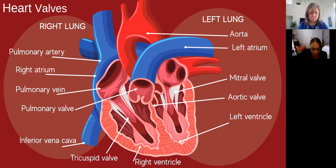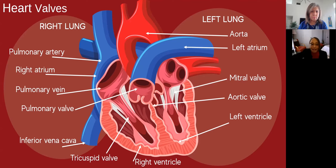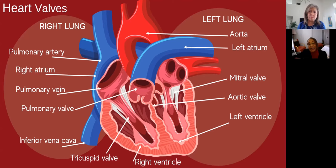That's one circulatory system. We have another circulatory system — if you look on the slide, the inferior and superior vena cava. Those vena cava bring blood from the rest of the body. Although people say it's deoxygenated, it is less oxygenated because it has brought oxygen to our entire system, and it is bringing the carbon dioxide back to the heart.